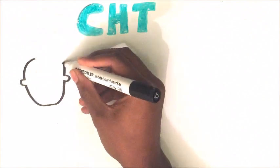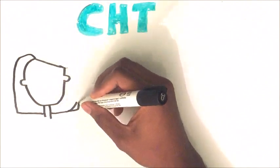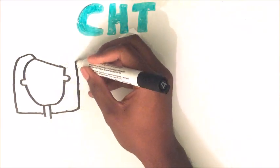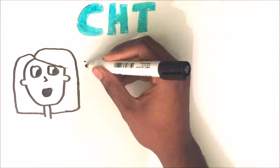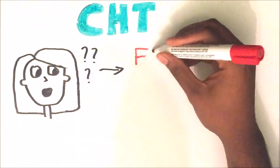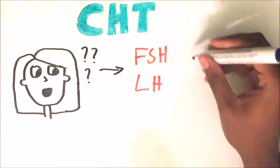The combined oral contraceptive works in three major ways. Firstly, it causes the hormones progestogen and oestrogen to be present constantly while it's taken. This effectively tricks the body into thinking that it's already pregnant, or it's released an egg.